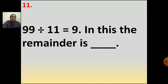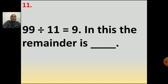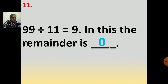Now the eleventh question: 99 divided by 11 is equal to 9. The remainder is dash. If you divide 99 by 11, you get the quotient 9. 9 elevens are 99. So what will be the remainder? The remainder will be 0.